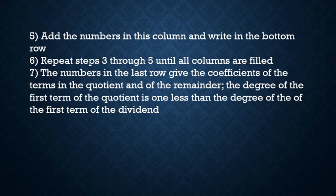The numbers in that last row — underneath the big horizontal bar — give us the coefficients of the terms in the quotient and the remainder. The last number in that row is always the remainder. The degree of the first term of the quotient is one less than the degree of the dividend. So if your dividend had degree 4, the first coefficient in the bottom row is for the x³ term.